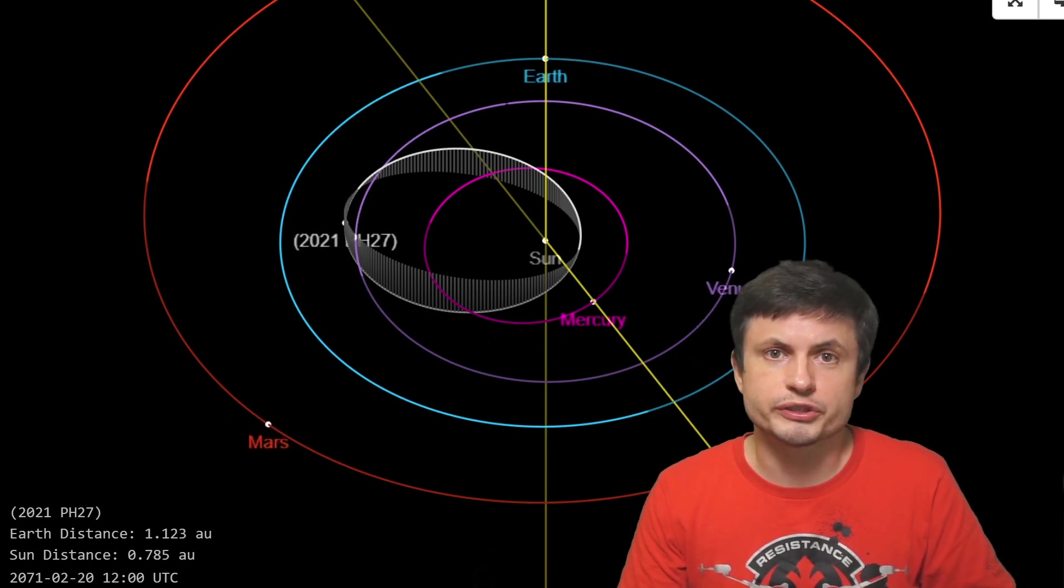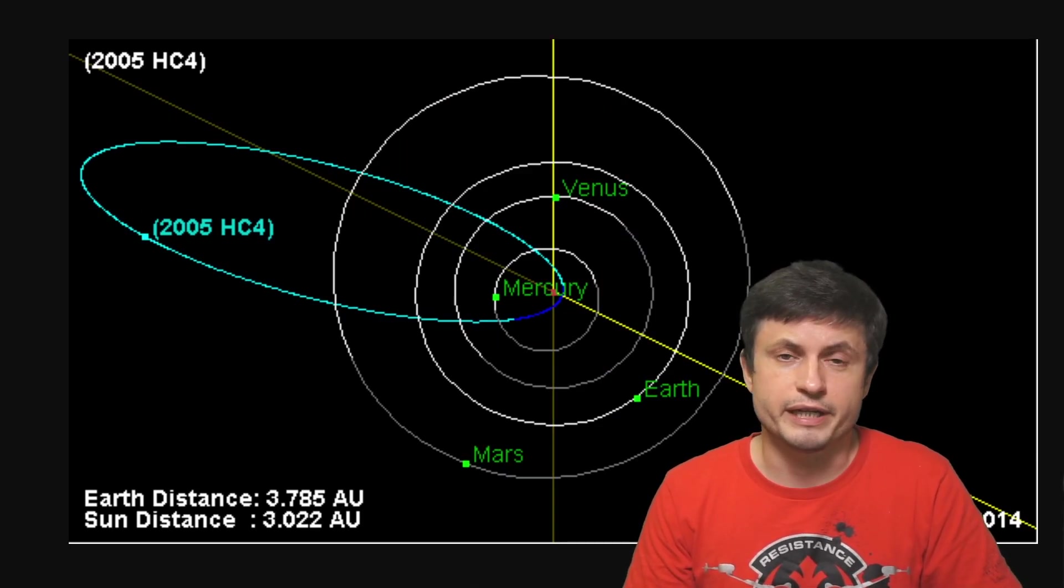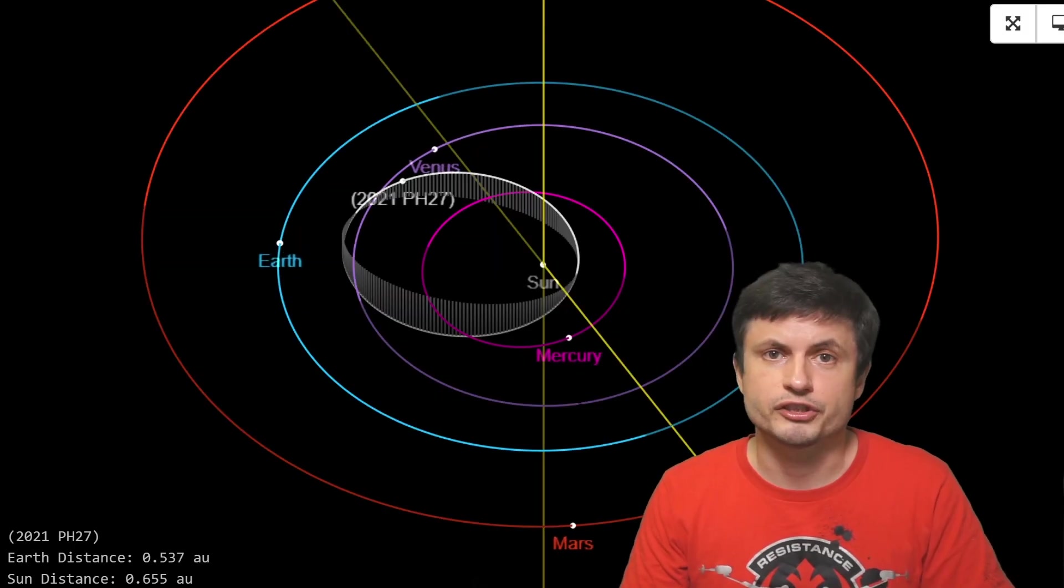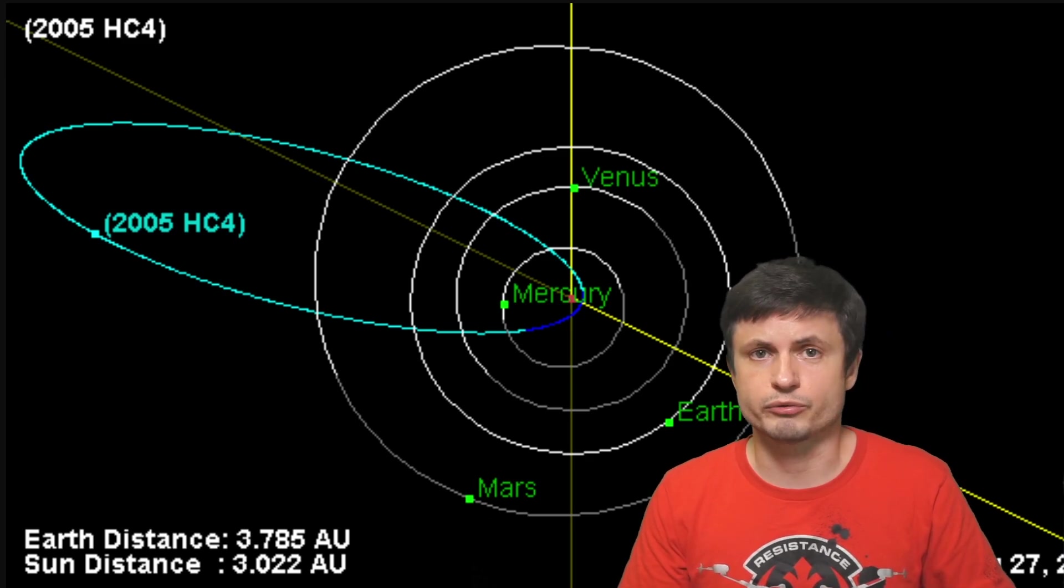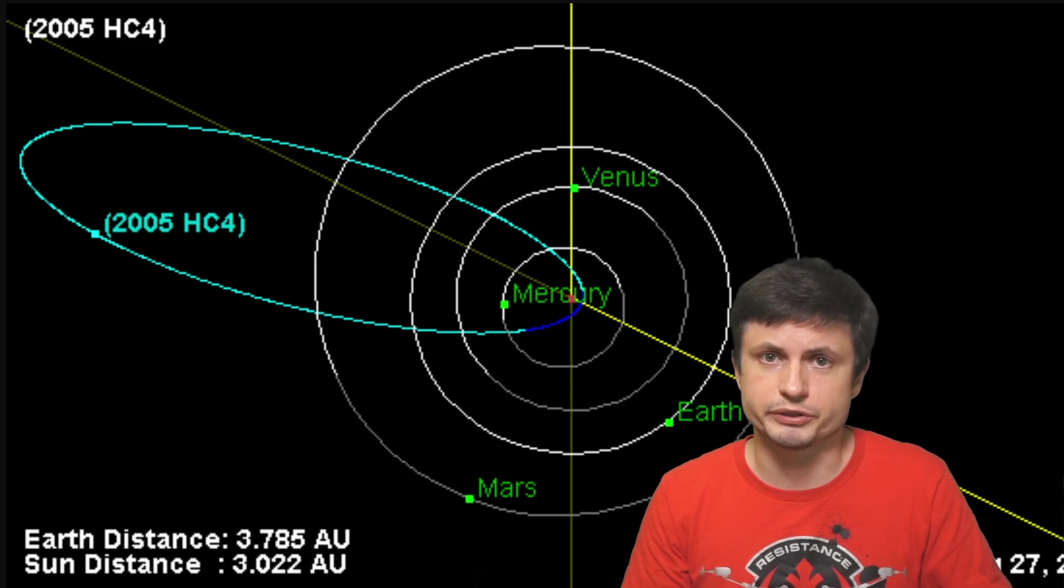And so until further observations in 2022, it's most likely going to be impossible to tell where this object actually came from. But it definitely seems to be quite unique compared to a lot of other asteroids. Interestingly enough though, this is not the closest asteroid to approach to the Sun. There's an object known as 2005 HC4 that comes even closer to the Sun, the distance of about 0.07 AU, or about half as close as this. But because this asteroid also goes really far away afterwards, it seems to have the highest speed, highest velocity of any asteroid in the solar system.